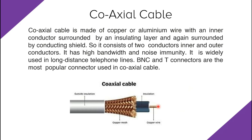Now we are going to learn about coaxial cable. Coaxial cable is made up of copper or aluminium wire with an inner conductor surrounded by an insulating layer and again surrounded by a conducting outer layer. It consists of two conductors — inner and outer. It has high bandwidth and noise immunity, so it is widely used in long distance telephone lines. BNC and other connectors are popular with coaxial cables, featuring outer insulation, copper mesh, inner insulation, and a copper wire core.